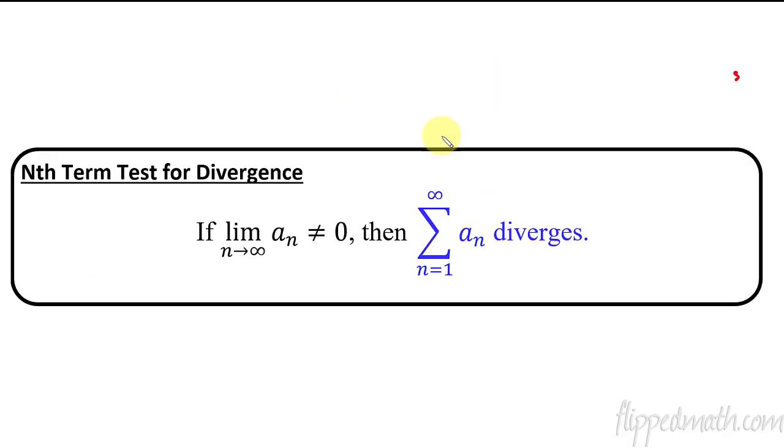All right, now what about the nth term test? Remember this? The nth term test is where you just take, it's kind of like where we look at the horizontal asymptotes. You just take this a of n, and you have the limit as n approaches infinity. And as long as it doesn't equal zero, then it diverges. We can't say that if it equals zero, then it converges. We don't know that. It might converge or diverge. But if it does not equal zero, if it's anything other than zero, we know for sure it diverges. Okay, that's the nth term test.